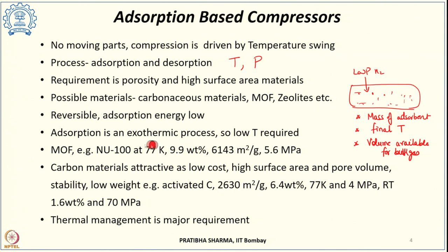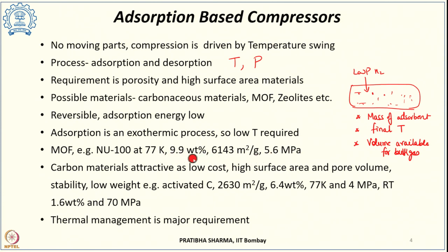A typical example of metal organic frameworks at liquid nitrogen temperature is NU-100. At 77 K, it was observed to have a surface area of 6143 meter square per gram, a pore volume of 2.82 centimeter cube per gram. At 77 K and 5.6 MPa, it could adsorb 9.9 weight percent, which is the highest achievable capacity for such materials.